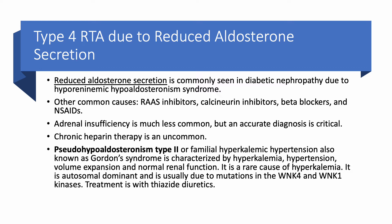The same mechanism can be seen with RAS inhibitors — ACE inhibitors, ARBs, direct renin inhibitors — and calcineurin inhibitors such as tacrolimus (Prograf) and cyclosporine, as well as non-steroidal anti-inflammatory medications. All of these can cause reduced aldosterone secretion leading to type 4 RTA.